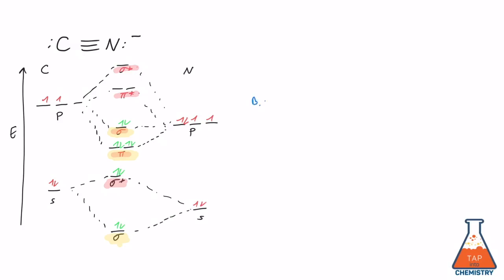there are eight electrons in bonding orbitals minus two electrons in antibonding orbitals, all divided by two, gives us six over two, which is three. A bond order of three corresponds to a triple bond, just as we expect for CN-.